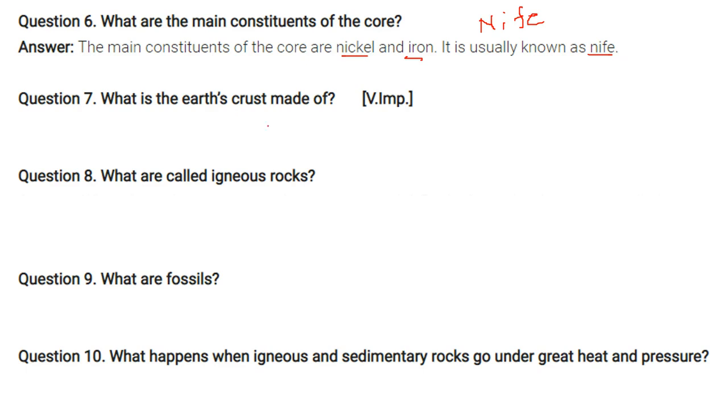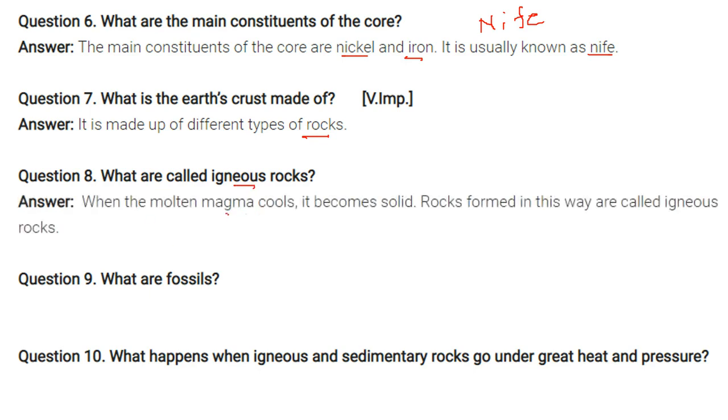What is the earth's crust made of? So it is made up of different types of rocks: igneous, sedimentary, metamorphic rocks. What are called igneous rocks? So when the molten magma cools down, it becomes solid. So rocks formed in this way, these are known as igneous rocks.